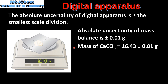The mass of the white powder, which is calcium carbonate, plus the weighing paper can be written as 16.43 plus or minus 0.01 grams. As we can see, the number of decimal places in the uncertainty should equal the number of decimal places in the recorded measurement.